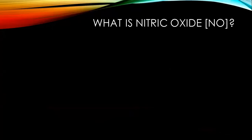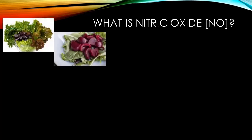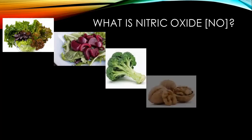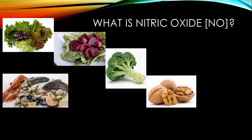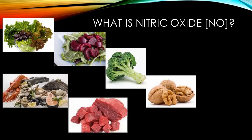First, let's talk about what nitric oxide is. It is a colorless, odorless gas, and our cells actually make it to help regulate blood pressure. They make it from dietary sources that include green leafy vegetables, beets, broccoli, walnuts, seafood, lean meat, and wine.